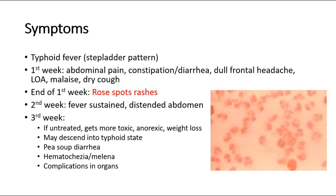In the third week, if the condition is untreated, the patient will become more toxic and the condition worsens. They may descend into typhoid state, characterized by confusion, delirium, and even psychosis. There is also pea soup diarrhea seen in some patients — foul-smelling, green-yellow liquid diarrhea. This may present in the second week or the third week depending on the patient.